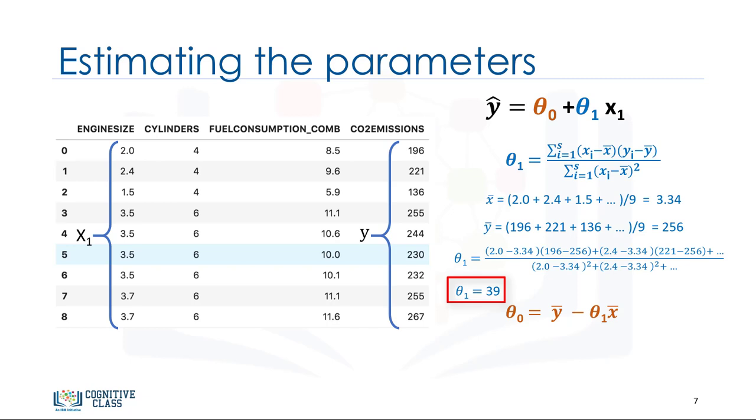It is our second parameter. It is used to calculate the first parameter, which is the intercept of the line. Now, we can plug theta1 into the line equation to find theta0. It is easily calculated that theta0 equals 125.74. So, these are the two parameters for the line, where theta0 is also called the bias coefficient, and theta1 is the coefficient for the CO2 emission column. As a side note, you really don't need to remember the formula for calculating these parameters, as most of the libraries used for machine learning in Python, R, and Scala can easily find these parameters for you, but it's always good to understand how it works.